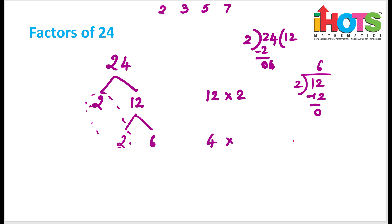So this is nothing but 4 into 6, because 2 into 2 gives you 4 into 6. Now again, 6 can be split into 2 into 3. So this can be written as 2 into 2 into 2, which gives 8, and 8 into 3.